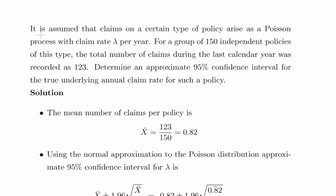So, it is assumed that claims in a certain type of policy arrive as a Poisson process with a claim rate lambda per year. For a group of 150 independent policies, the total number of claims during the last calendar year was 123. So, this will give us our rate, essentially.